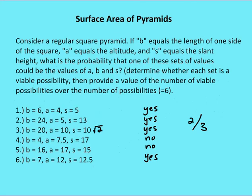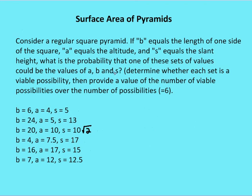One last problem before we finish up and move on to more practice problems. Consider a regular pyramid. If B equals the length of one side of the square base, A equals the altitude, and S equals the slant height, what is the probability that one of these sets of values could be the values of A, B, and S? We're going to determine whether each set is a viable possibility, then provide the number of viable possibilities over the total number of possibilities. Take a moment, pause the video, and then come back and we'll review the answers.